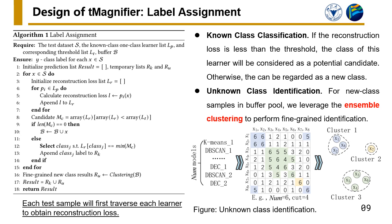The third component, magnifier, first traverses each learner to perform the known class detection, and then leverages ensemble clustering to obtain fine-grained labels for unknown classes.